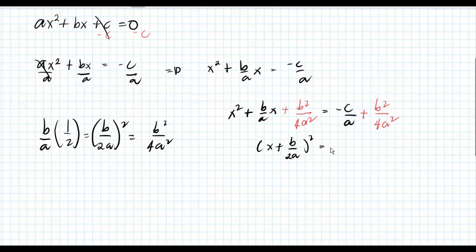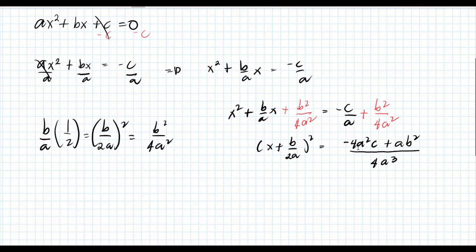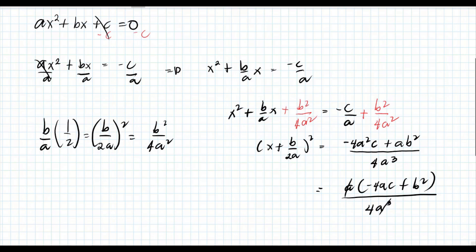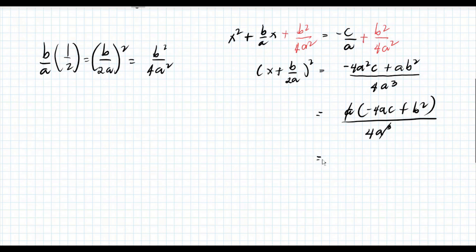Let's simplify the right side using cross multiplication. Negative c times 4a squared is negative 4a squared c, and a times b squared is positive ab squared, all over a times 4a squared which is 4a cubed. Looking at the numerator, we can factor out a, giving us a times the quantity negative 4ac plus b squared. We can then cancel one a, leaving negative 4ac plus b squared all over 4a squared.